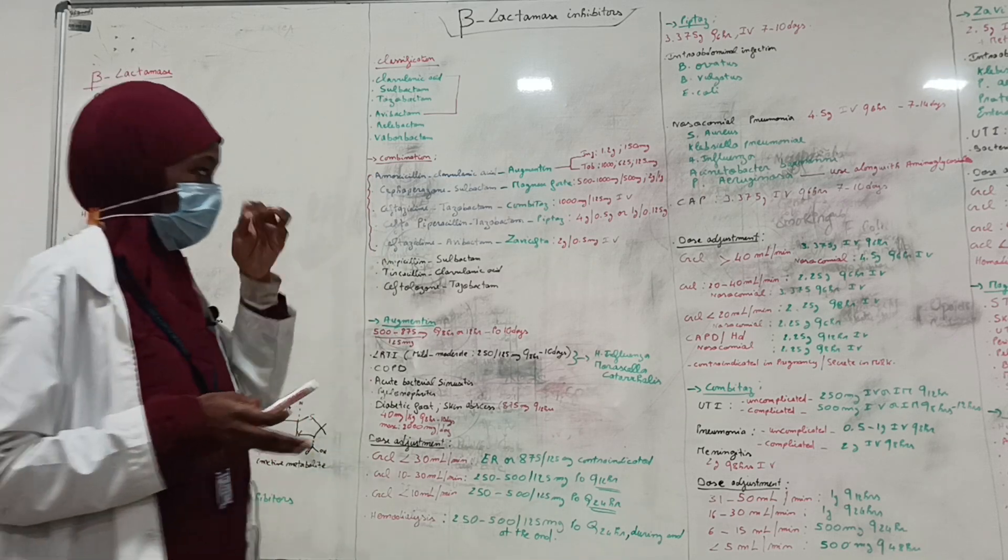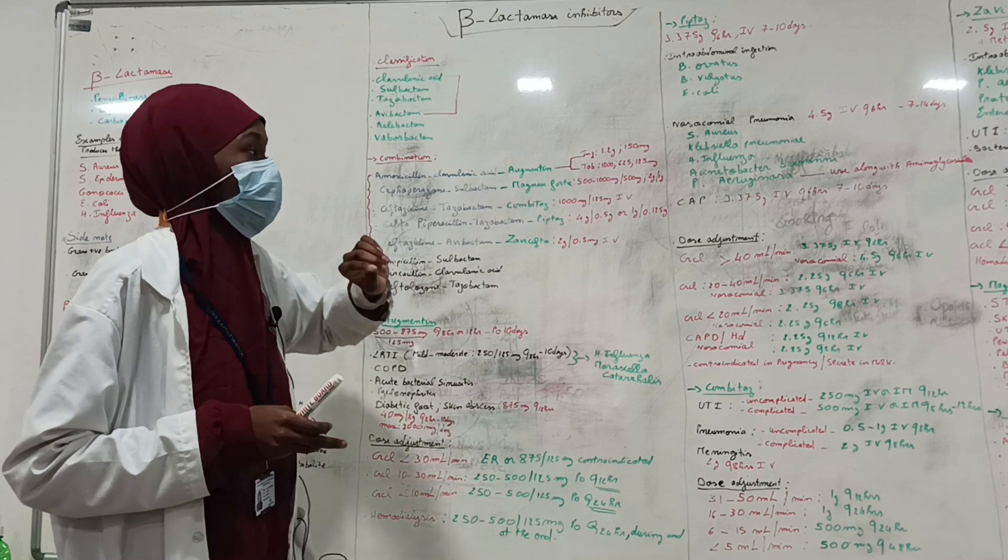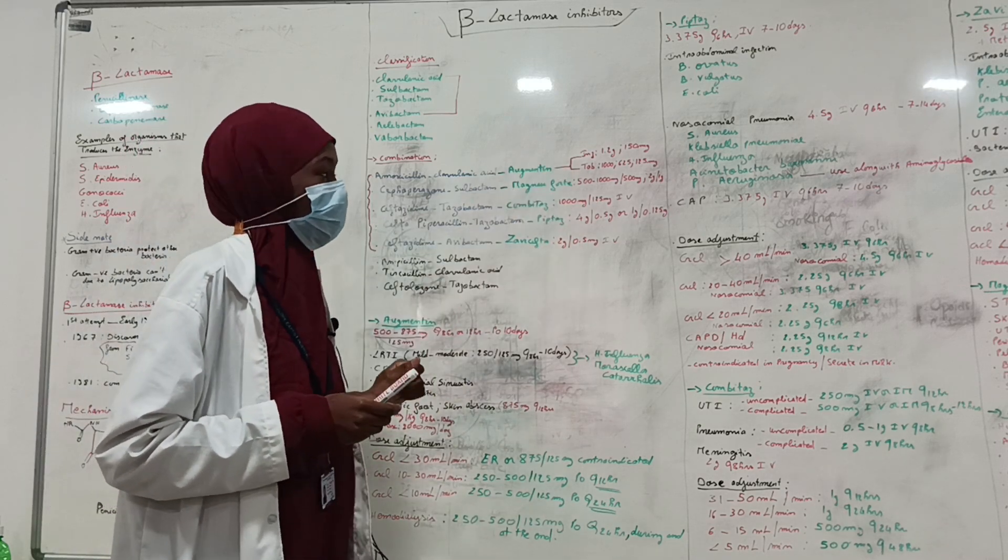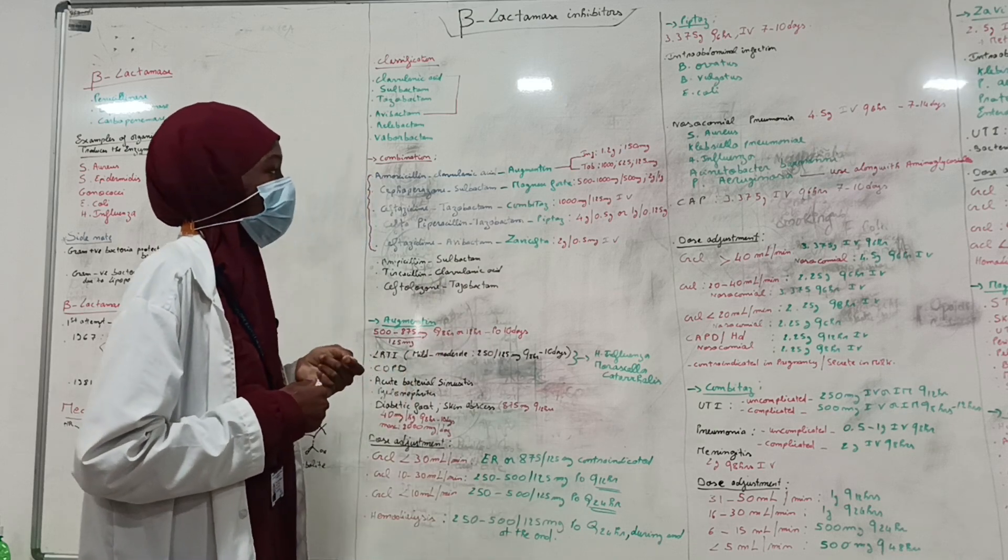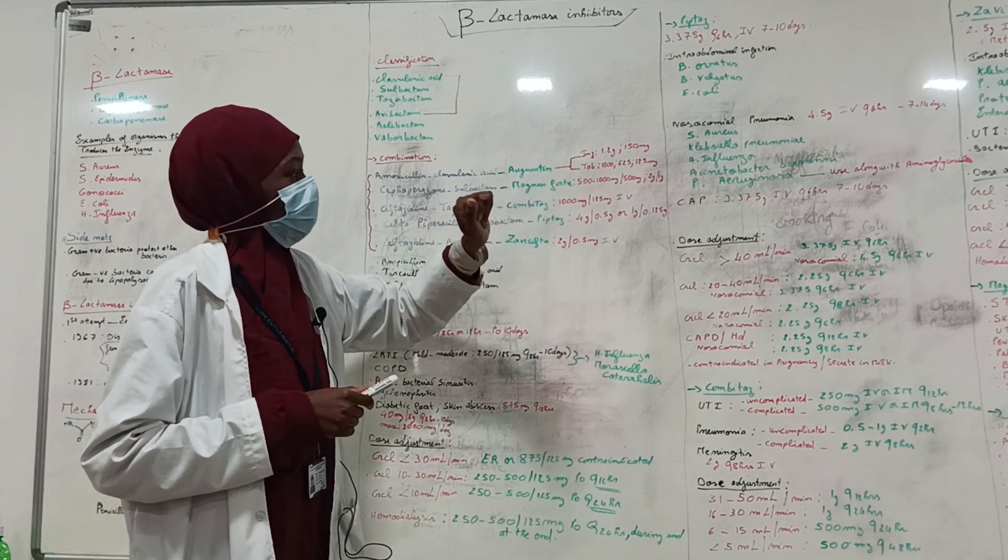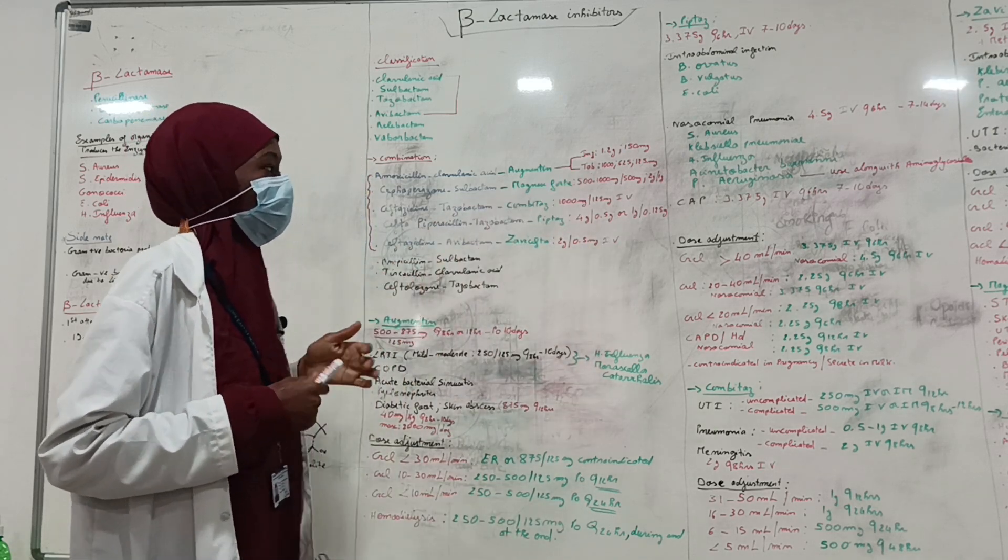As a dosage form, Augmentin is the only one available as tablet and injection. It comes as injection 1.2 gram, 150 mg. And as tablet, 1,000 mg, 625, and 125 mg.